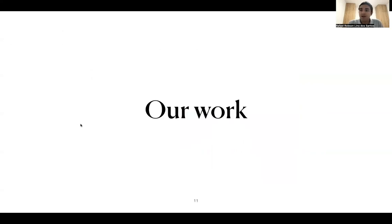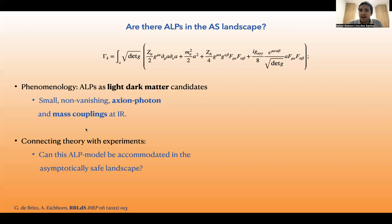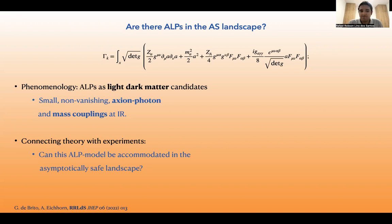Our work is interested in axion-like particles as light dark matter candidates. They should have a very small mass, but non-vanishing, if we want to describe dark matter. And now an important part: we want to connect theory with experiments.